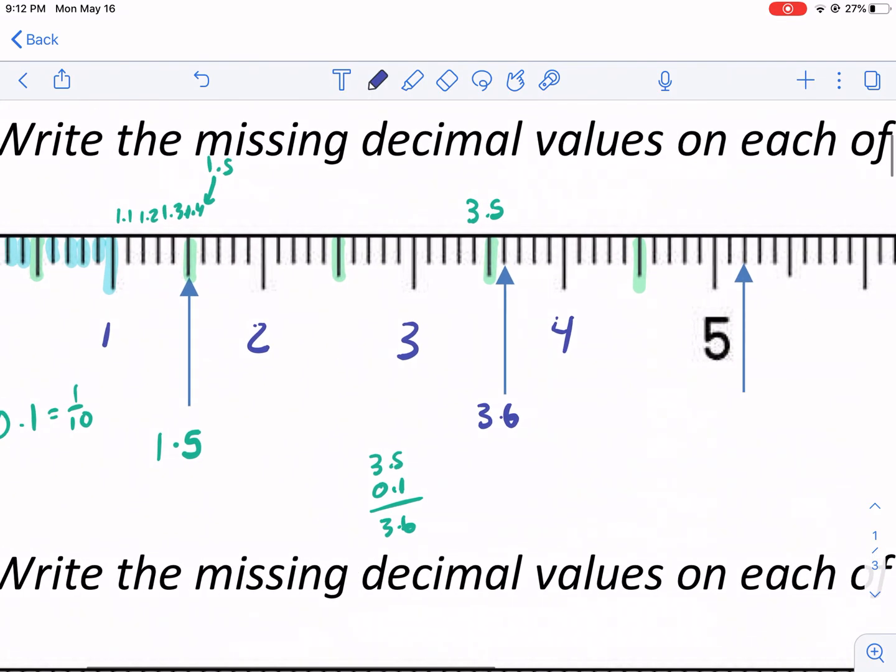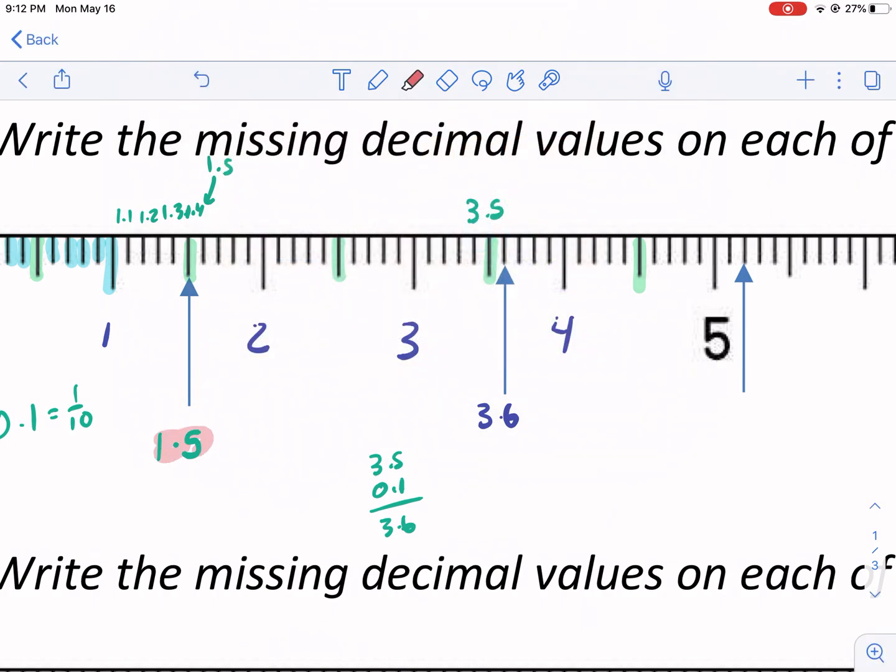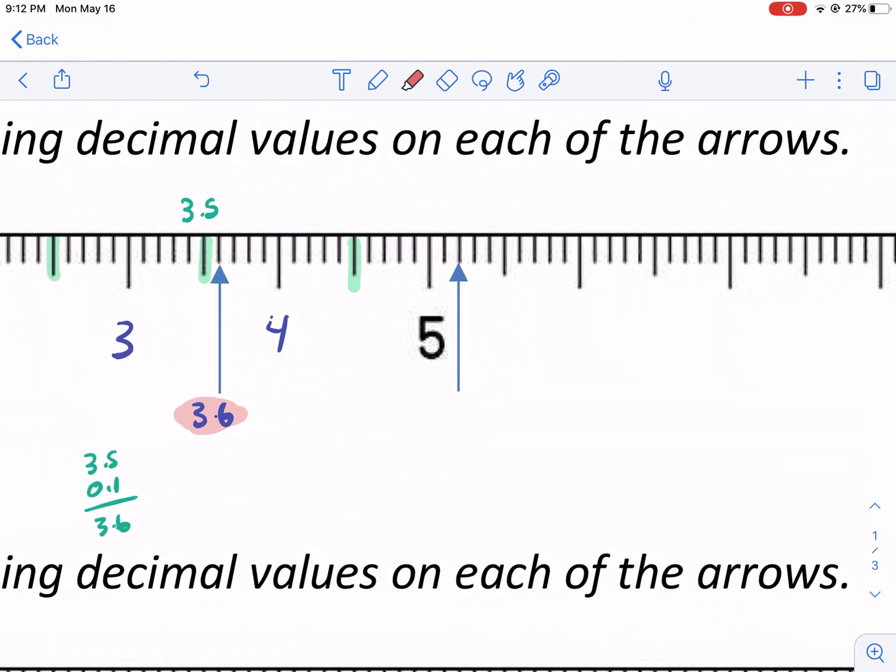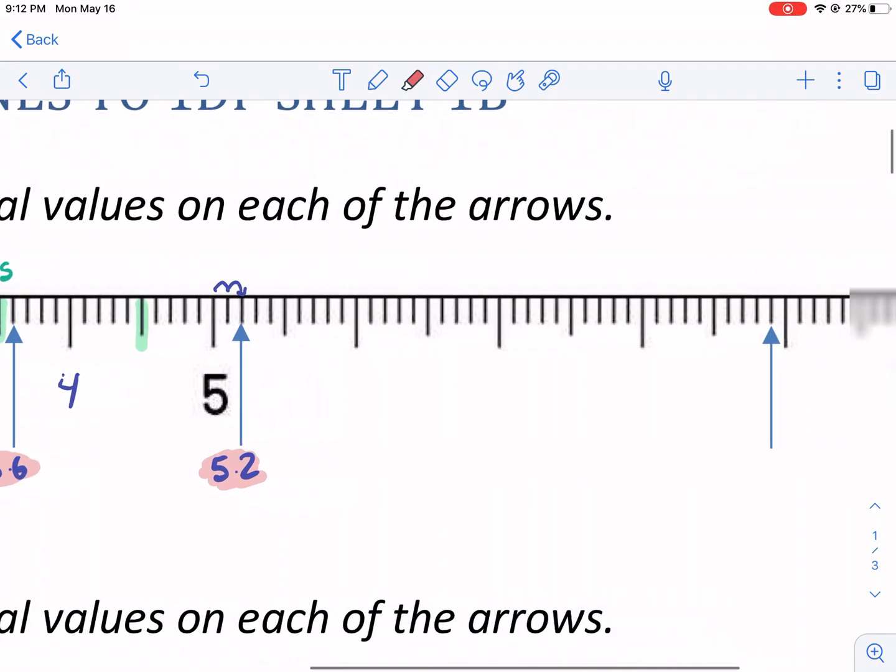Let me erase this. This is just gonna be 3.6. I should highlight this in a color. Which color should we pick? Let's go that light pink. So we have 1.5 is our answer there. 3.6 there. Let's get to the next one here. We're a little bit past the 5. This time we're 1, 2 past the 5. So that is gonna be 5.2. It's as simple as that. 5.2.